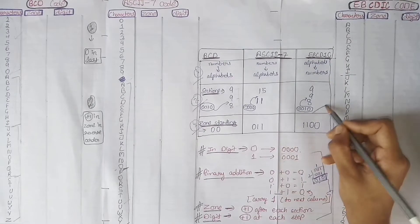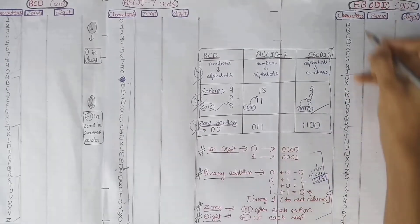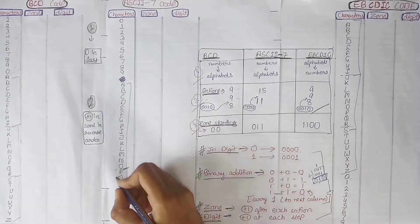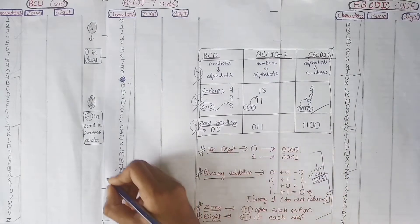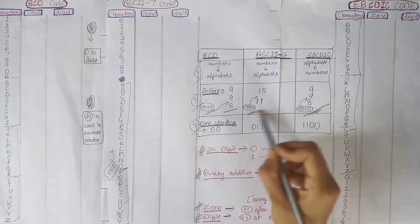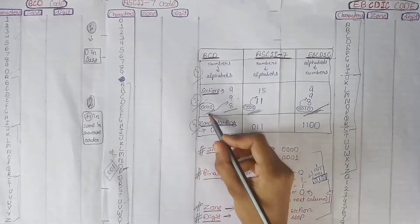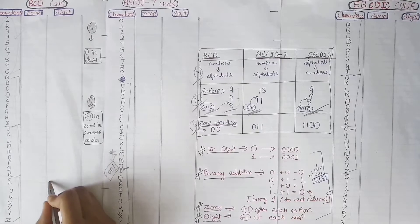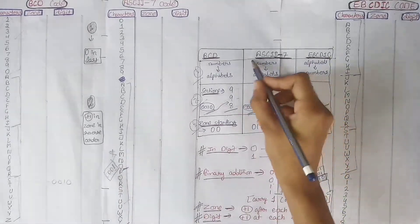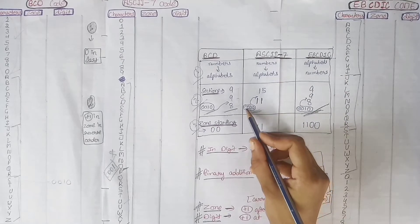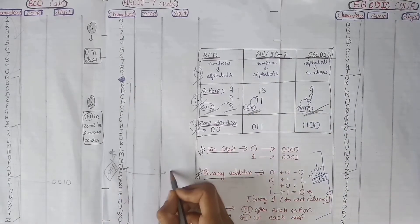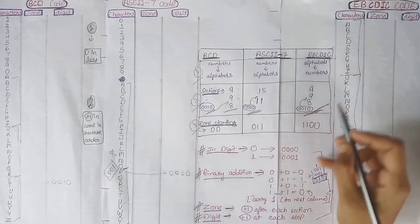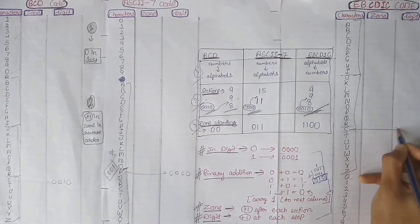In the EBCDIC code, the sections are also divided as 9-9-8. Now, in digits, each section will start from 0001, but the third section of every code does not follow this rule. The third section of BCD code starts from 0010 in the digits area, so we write 0010 there. In ASCII code, the third section starts from 0000, so we write 0000 there. In EBCDIC code's third section, we write 0010.